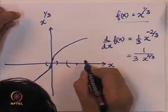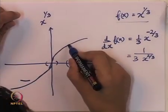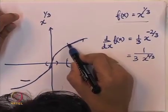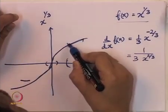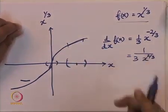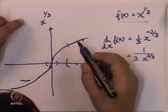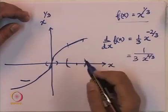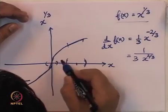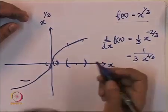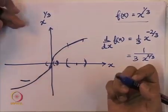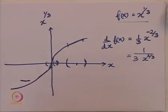At any other point away from x = 0, we are able to find a ball such that there will be a number L satisfying the Lipschitz inequality. As long as we do not include the point 0 in the ball, we can find where the absolute value of the slope is maximum and choose L accordingly. Hence, f(x) = x^(1/3) is locally Lipschitz at every point except x = 0.